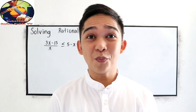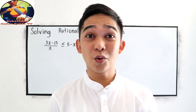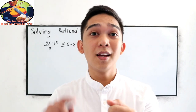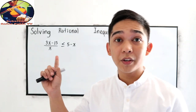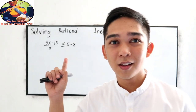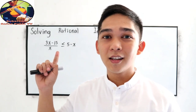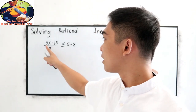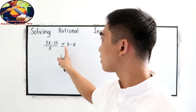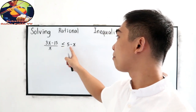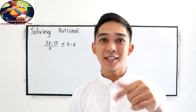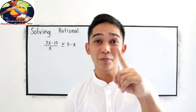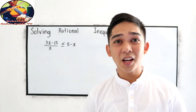Before watching this video, please make sure that you already watched our tutorial videos on inequalities and interval notation, and our problem number one in solving rational inequalities. This will be the checking of problem 3x minus 15 over x, less than or equal to 5 minus x — that was your assignment from our tutorial video last time. Now let us check your work.